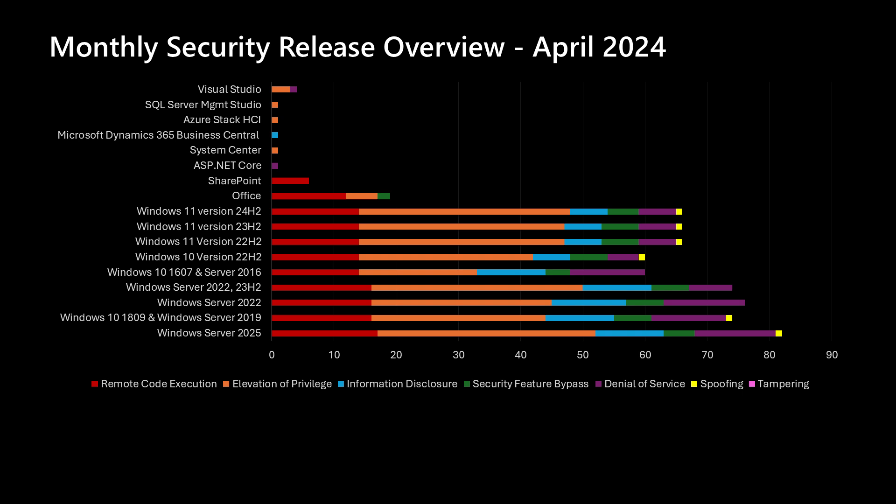As we continue moving up the chart, we get into Office and SharePoint. We get into some developer tools such as ASP.NET and Visual Studio, which have a handful of vulnerabilities. System Center has a vulnerability this month. Microsoft Dynamics 365 Business Central has a vulnerability being addressed. And rounding it all out, SQL Server Management Studio has a vulnerability that needs to be addressed. SQL Server itself does not have an update this month — it's only the Management Studio, and you'll need to update SSMS.